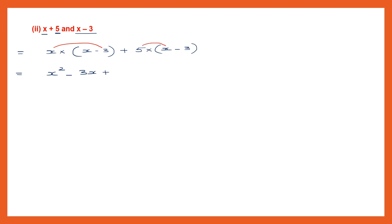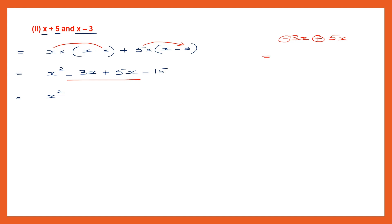Now we multiply 5 into x — 5 into x will be 5x. Then we multiply 5 into minus 3. We can write minus here and 5 into 3 is 15. So we have x square. Now look at minus 3x and plus 5x — two like terms. When signs are different, put the sign at the bigger number and subtract: 5 minus 3 is 2. So we have plus 2x and minus 15. Our answer is x square plus 2x minus 15.